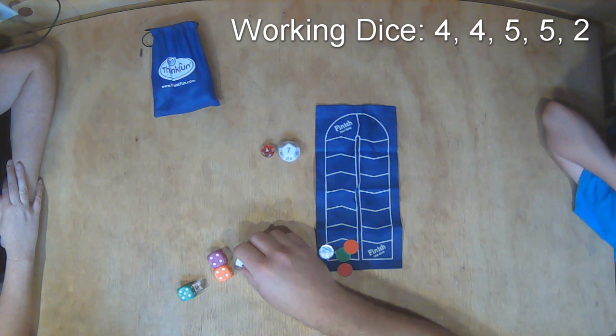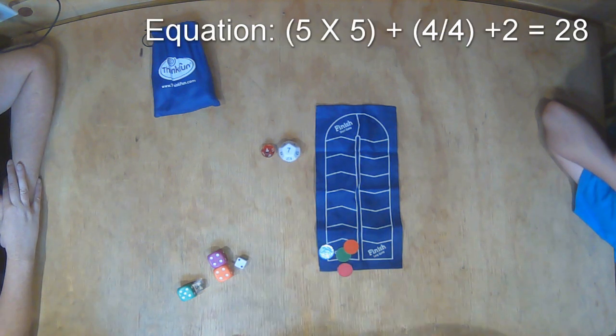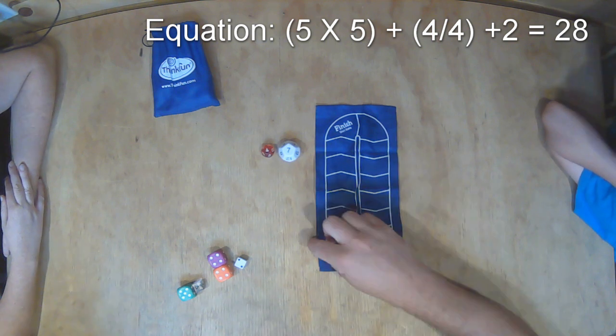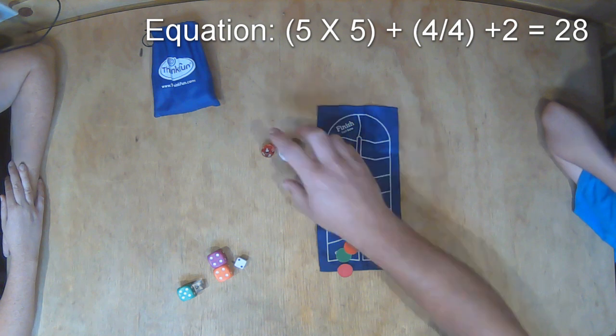He can use any equation he likes, like addition, multiplication, subtraction, division, and in any combination. Looks like he ended up with 5 times 5 plus 4 divided by 4 plus 2 to get 28.